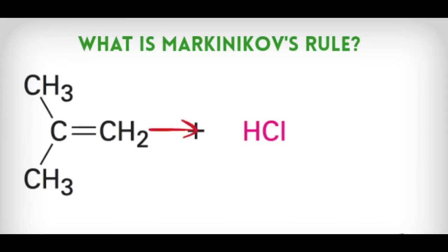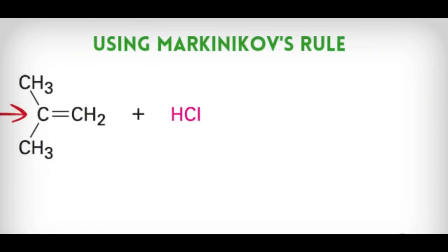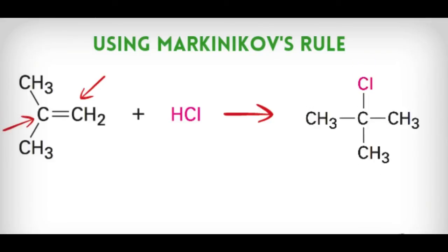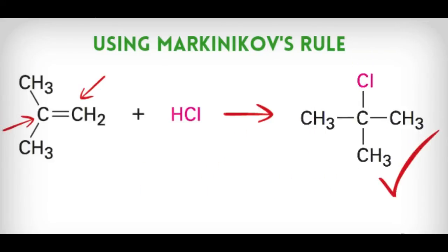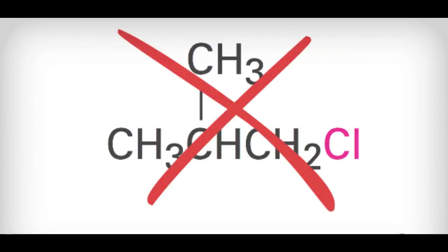So, what is Markovnikov's rule? Markovnikov's rule helps you determine which carbon the chlorine is going to attach to and which carbon the hydrogen is going to go to. Vladimir Markovnikov came up with the rule, which states that the hydrogen will always go to the carbon that has the greater number of hydrogens, and the X part — like the chlorine or bromine — will always go to the other carbon. So, the hydrogen always goes to the carbon with the greater number of hydrogens; the first carbon has two hydrogens, while the carbon on the left has zero hydrogens. So the hydrogen goes to the right carbon, and the left carbon gets the chlorine molecule. Adding it the other way around is not going to be the product formed.